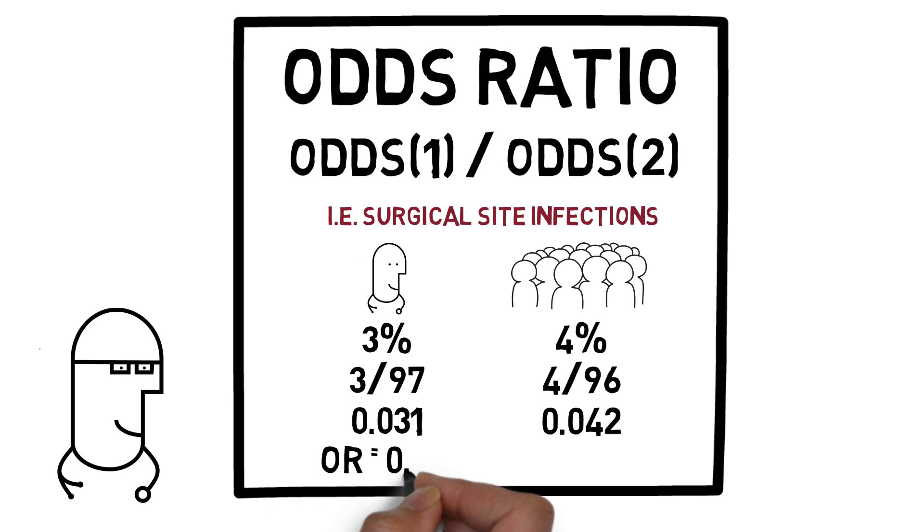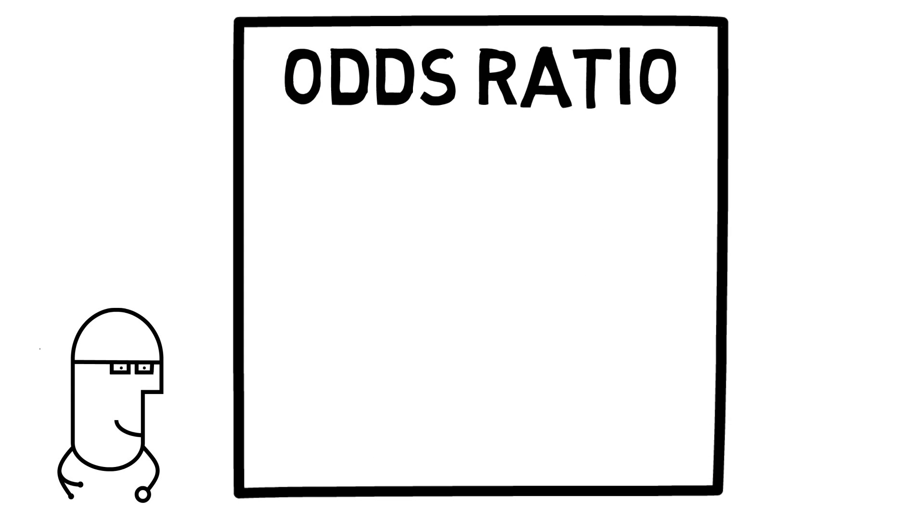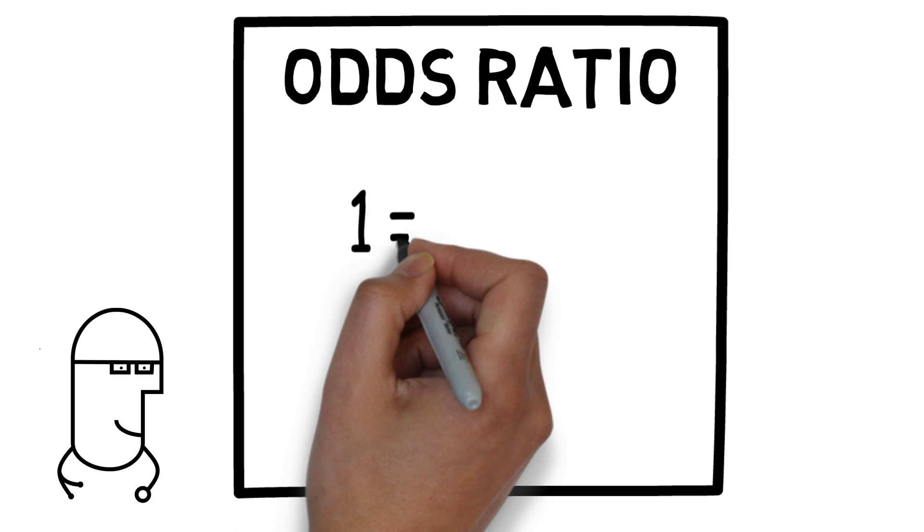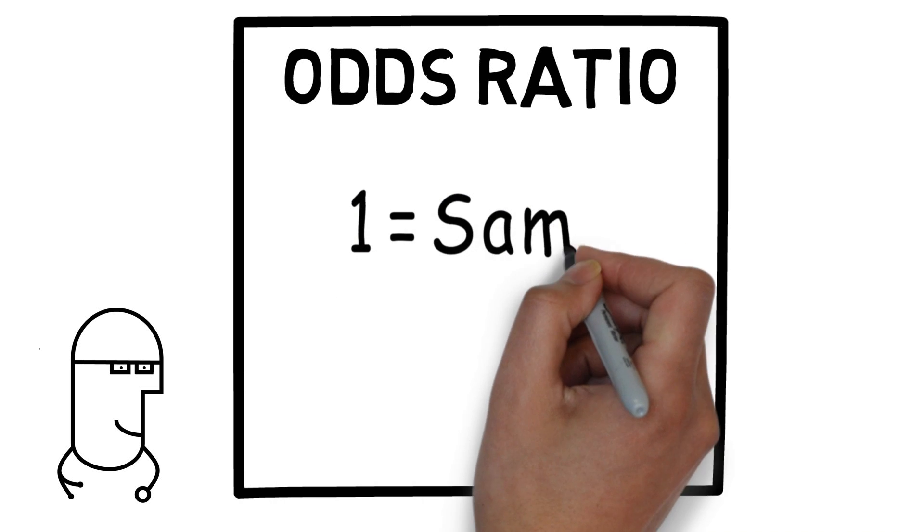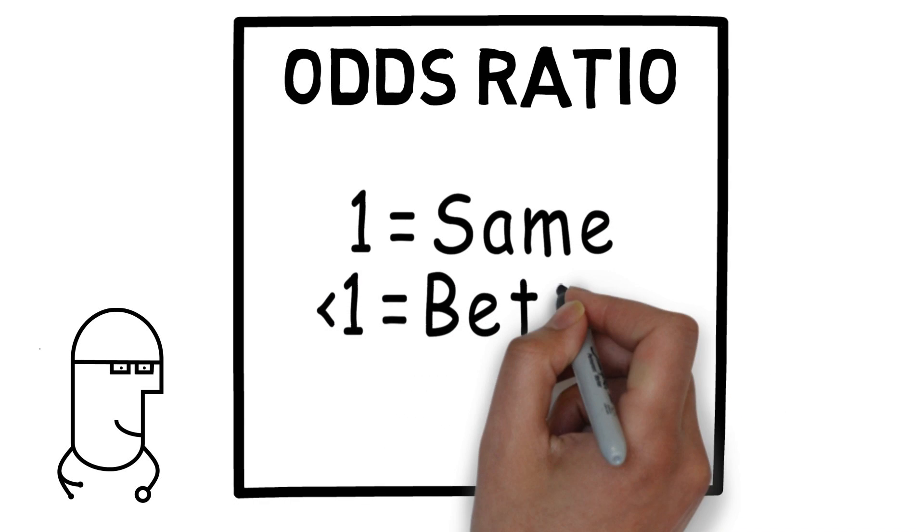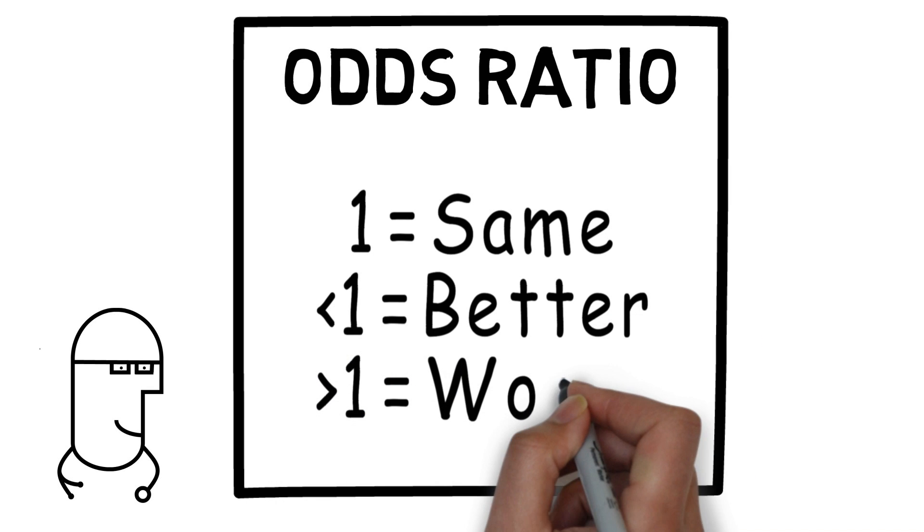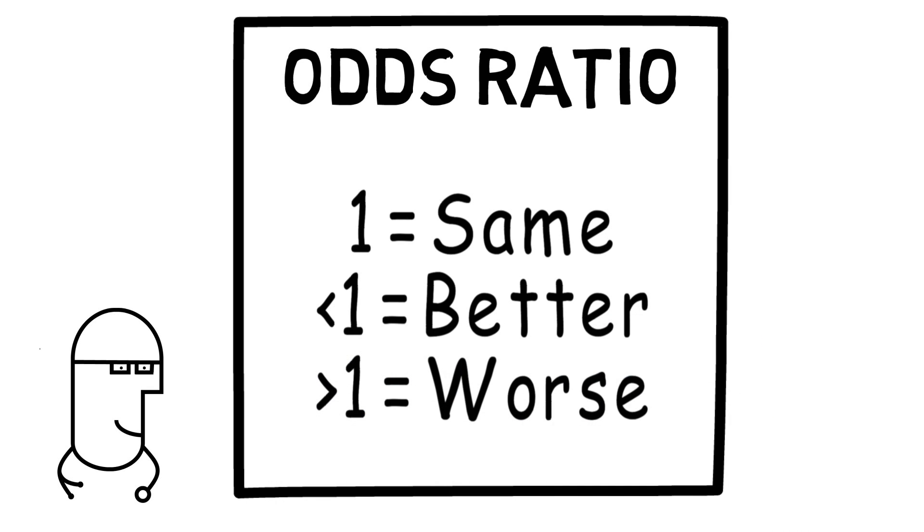To calculate the odds ratio, all we do is take your odds of a surgical infection and divide that by the odds of a surgical infection in your comparison group, giving us a value of 0.74. Now just in case you're not a clinical epidemiology nerd, I want to make this really easy. If the odds ratio is 1, the risk of harm to your patients is the same as your comparison group. If the odds ratio is less than 1, it means that your patients are less likely to experience harm, and that's a good thing. And if the odds ratio is greater than 1, it means that your patients are more likely to experience harm compared to your peers.